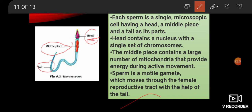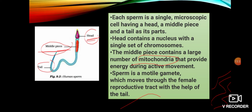In sexual reproduction, two parents are needed. The sperm has a single set of chromosomes, and the female gamete also has a single set of chromosomes. The middle piece contains a large number of mitochondria, which provide energy during movement — mitochondria being the powerhouse of the cell. The sperm is a motile gamete; it moves through the female reproductive tract with the help of its tail.